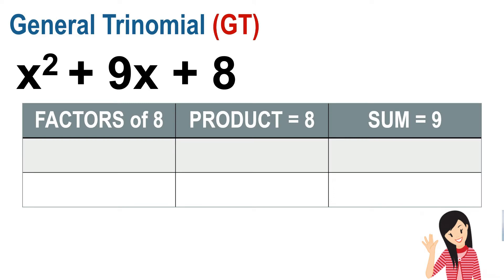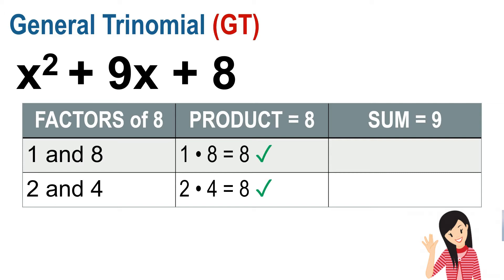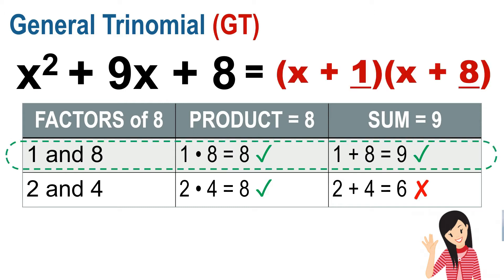For the general trinomial, factor the last term. Factors of 8 are 1 and 8, and 2 and 4. To identify which pair to use, the product must equal the last term and the sum must equal the middle term. Both pairs multiply to 8, but when added: 1 + 8 = 9 and 2 + 4 = 6 — so if the middle term matches, use that pair. The answer is written as (x + 1)(x + 8), coming from positive 1 and positive 8.